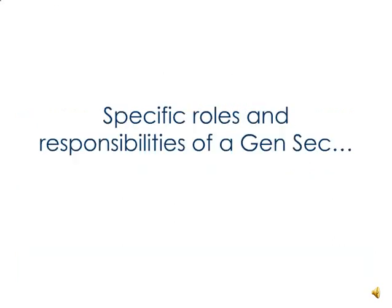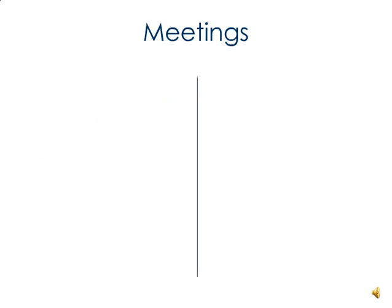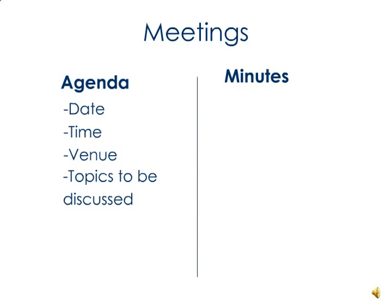Next, some specific roles and responsibilities of a GENSEC. Firstly, meetings. It's the GENSEC's role to make the agenda before the meeting and write up the minutes afterwards. The agenda should contain the date, the time, the venue of the meeting, and also a list of the topics to be discussed. This should be sent out before the meeting so that people can prepare and also contribute to the topics on the agenda if necessary.